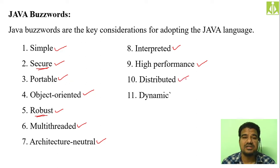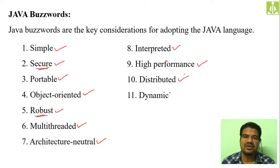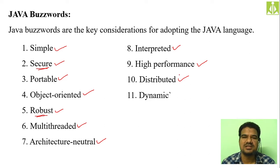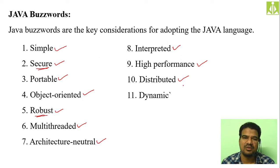Then 'distributed.' Java is used to develop not only standalone applications but also web-based applications. When we say web, it involves multiple servers, multiple clients, multiple systems over the internet — involvement of multiple devices. This phenomenon is something like distributed: instead of the application running on one single system, the applications can run all over the internet, all over the world, all over the network. So using Java you can develop distributed applications or web applications.